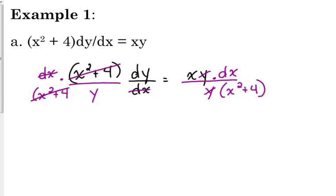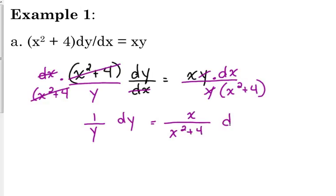I did a whole lot of stuff in one step. You can divide x squared by y to separate those variables. So we've got on the left side 1 over y — it's very important that it's 1 over y — dy is equal to x over x squared plus 4, dx.